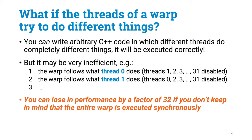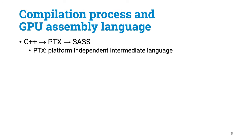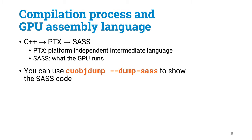I will now conclude this lecture by mentioning a couple of technical details somewhat specific to CUDA — things that are good to be aware of, so that you know what to search for when you need more information. First, a bit about the compilation process. When you use NVCC, it will compile the CPU-side code as usual, but it will compile the GPU-side code into an intermediate language called PTX. PTX is platform independent. Then PTX is compiled to an assembly language called SASS, and SASS is what the GPU actually runs. You can use cuobjdump to look at the SASS code.